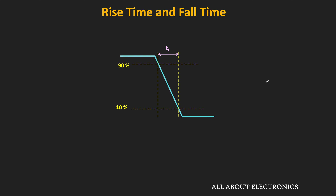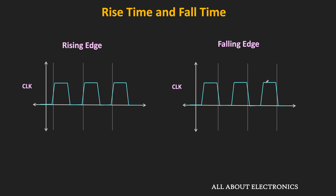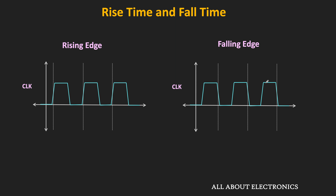When measuring the pulse width, it is measured with respect to the 50% of the pulse amplitude. The rising and falling edges of the clock are also defined with respect to the 50% of the clock amplitude. But during our discussion, for simplicity we will assume that there is a sharp transition in the clock signal. That is the rise time and the fall time in digital circuits.